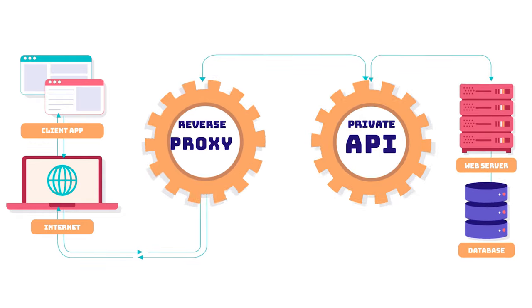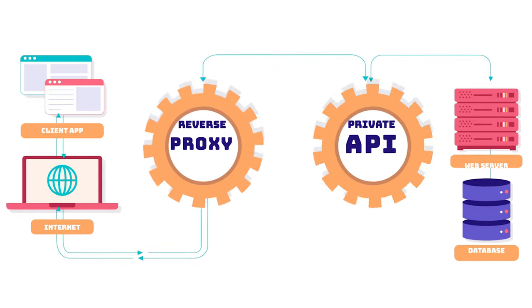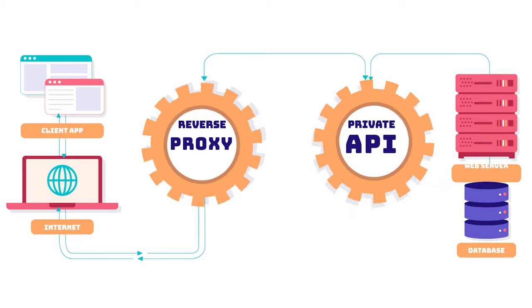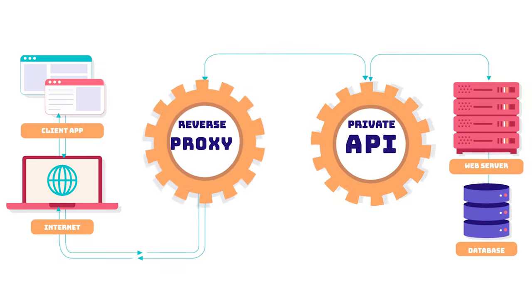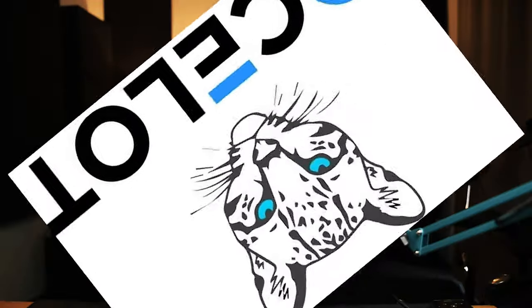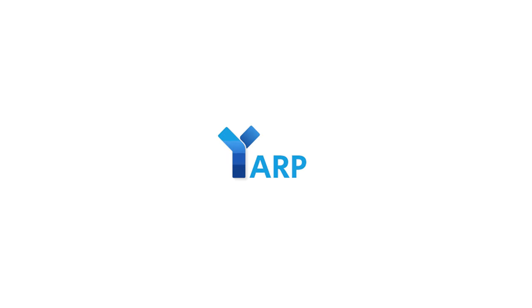I'm working on a replacement of the current proxy API. The purpose of this proxy is to expose some endpoints from private APIs to the internet. I decided to use Ocelot API Gateway or YARP reverse proxy as the core component of the new solution. But that's a different story — let me know in the comments if you want to see more detail about this implementation.